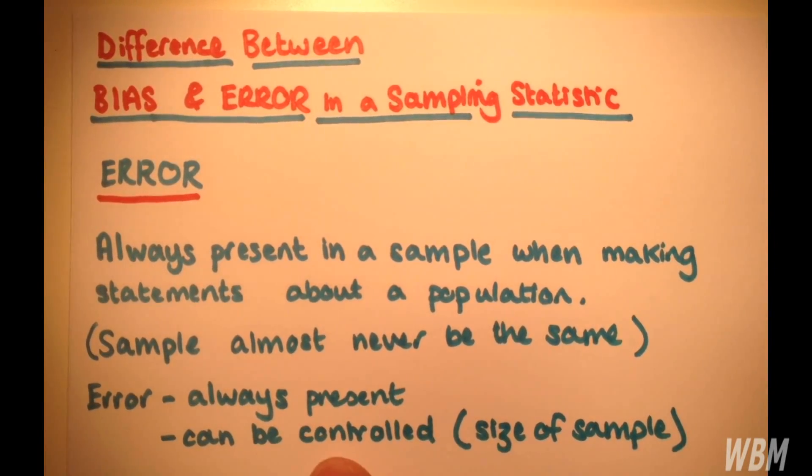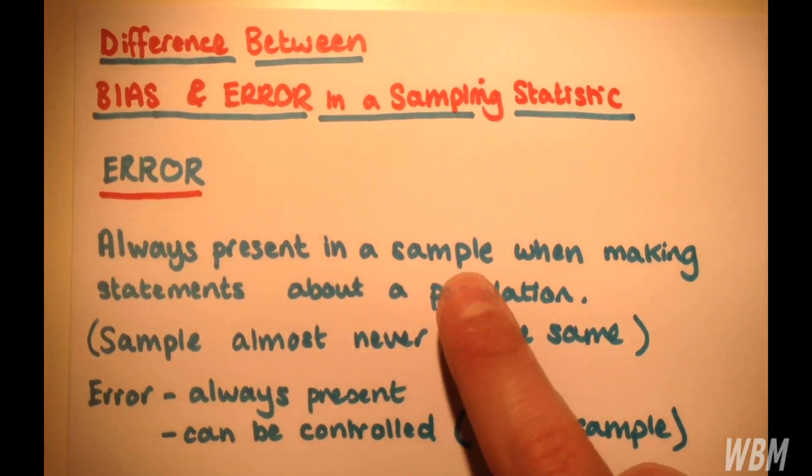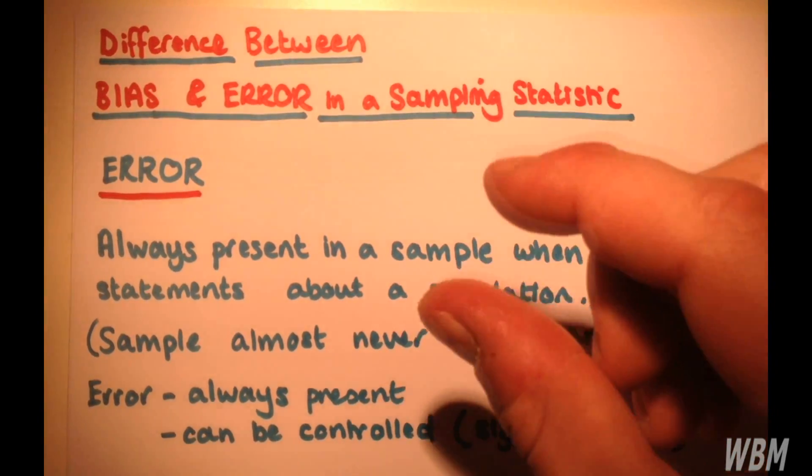However, it can be controlled via taking a larger sample size. As your sample size tends towards the size of the population, your error is going to decrease.